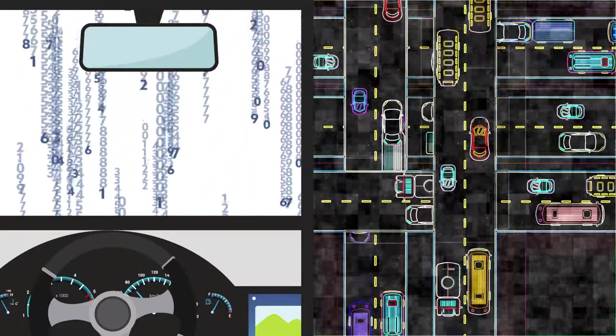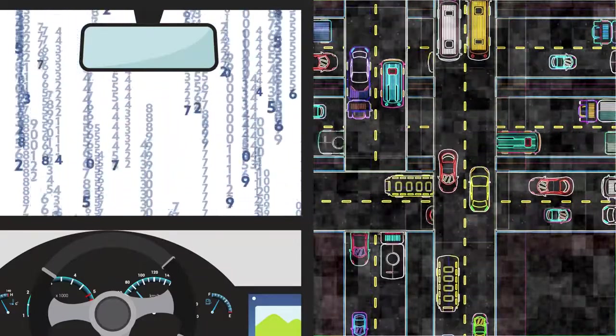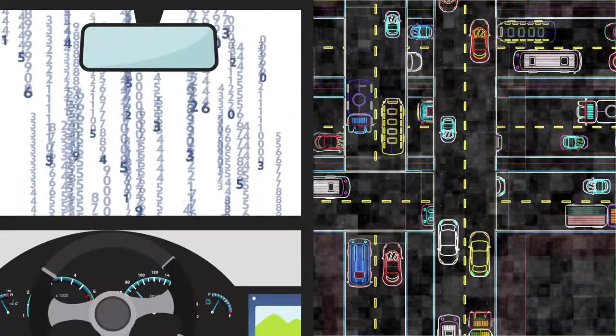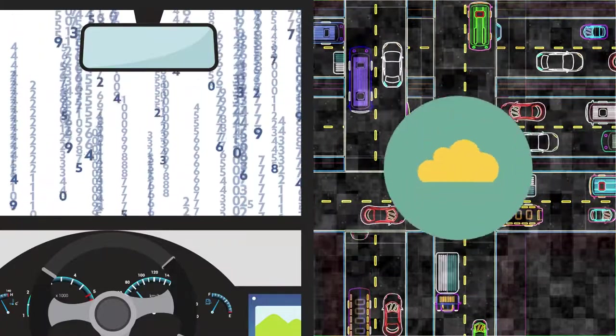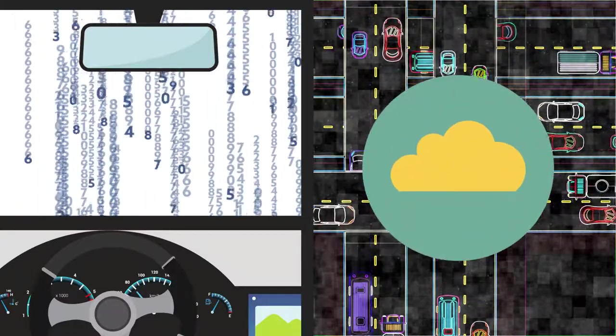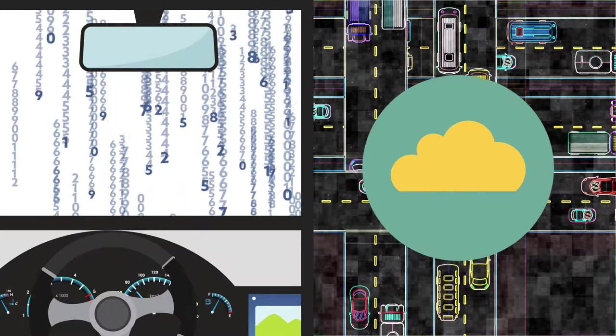It's an incredible amount of data to have to process on the fly. Fortunately, the onboard computer doesn't have to do it all by itself. Part of the work is done in the cloud by a remote supercomputer. That allows for lightning-quick reflexes that other models don't have.